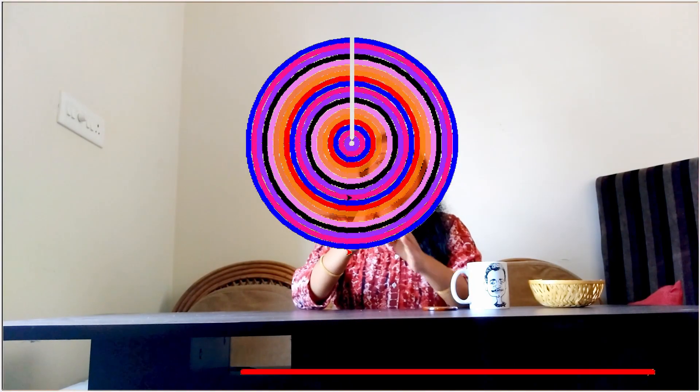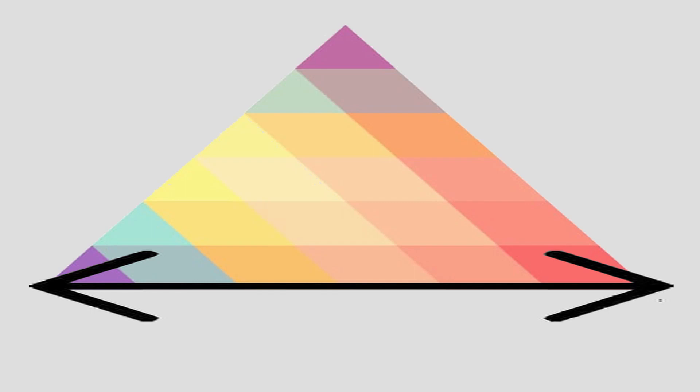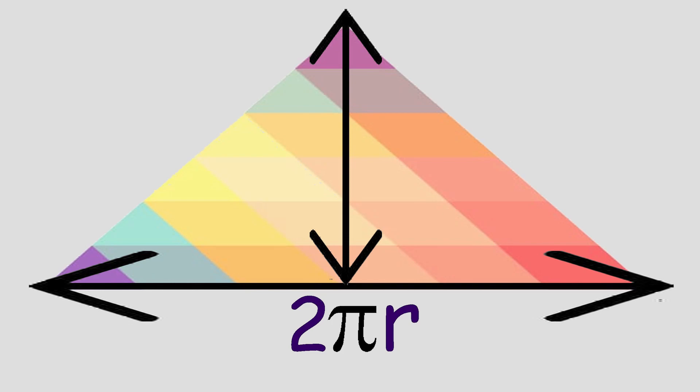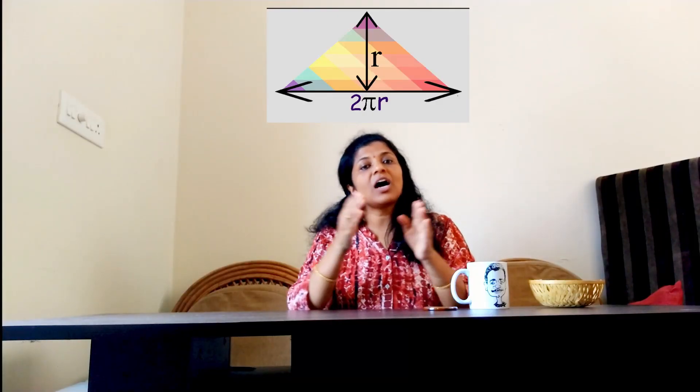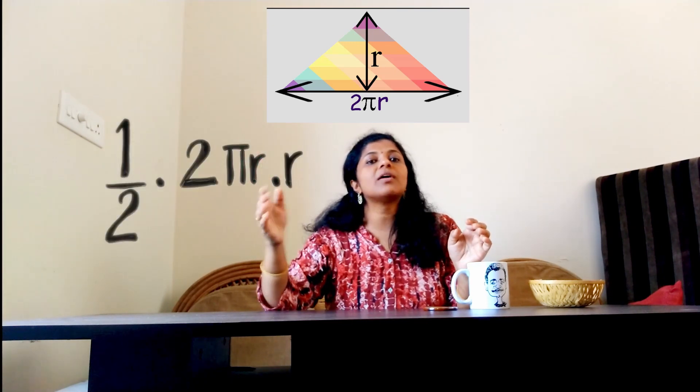To calculate the area of a circle, take a circle and fill it with smaller circles. If we cut along the radius and lay it open, we get a triangle. We learned how to calculate the area of a triangle: area equals half times base times height. Here, the base is the circumference of the outer circle, which is 2 pi r, and the height is the radius. So area equals half times 2 pi r times r, which equals pi r squared.